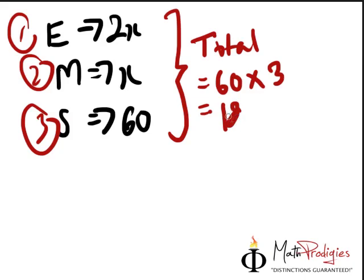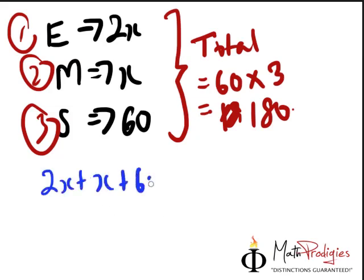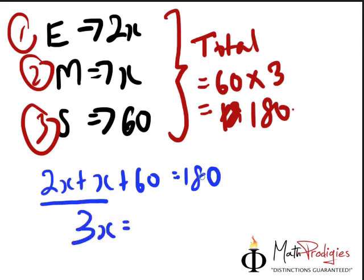In other words, total is equal to 60 times 3 because average of 1, 2, 3 subjects. So we get 180. So in other words, we can form a simple equation, which is 2x plus x plus 60 gives me 180. Now what do we do? Like I told you before, put the numbers and the variables on different sides of the equal sign. So 2x plus x, we put it on the left-hand side, 3x equals to 180.